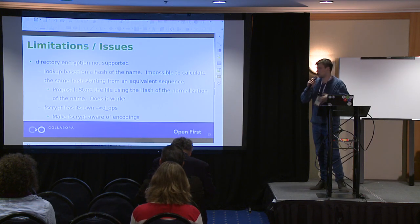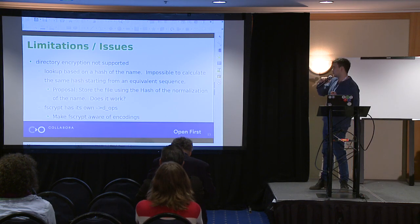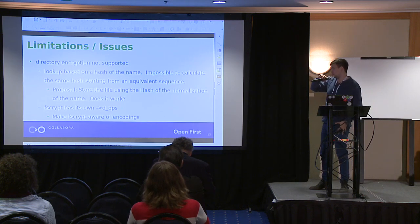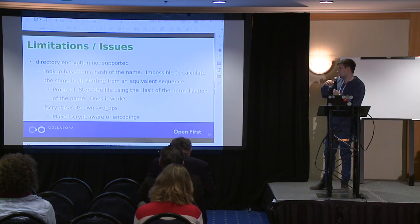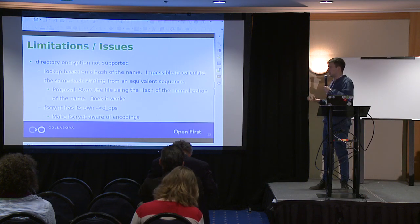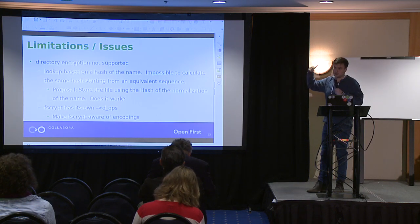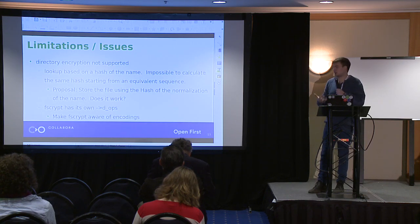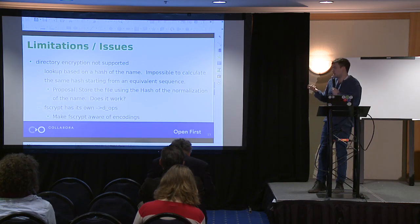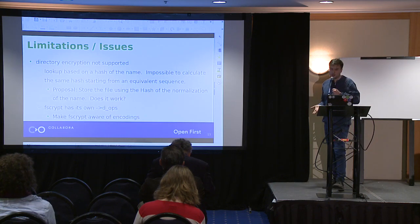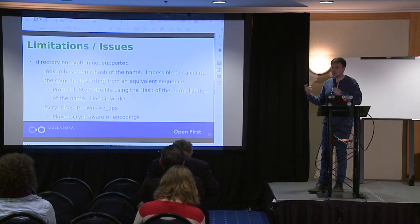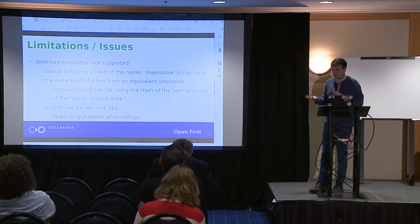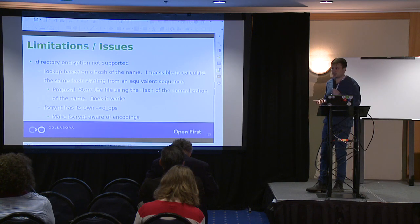There are a few limitations in the current implementation. The first one I mentioned is the negative entries. I'm still not supporting directory encryption with fscrypt because the lookup is based on the hash of the name, which is created based on the name that was first used to access it, and it's impossible to recalculate that hash using an equivalent sequence. So what I'm proposing is that we change the hash stored in encrypted volumes to use the normalized version to calculate the hash. My question is: does anyone see a problem with that?